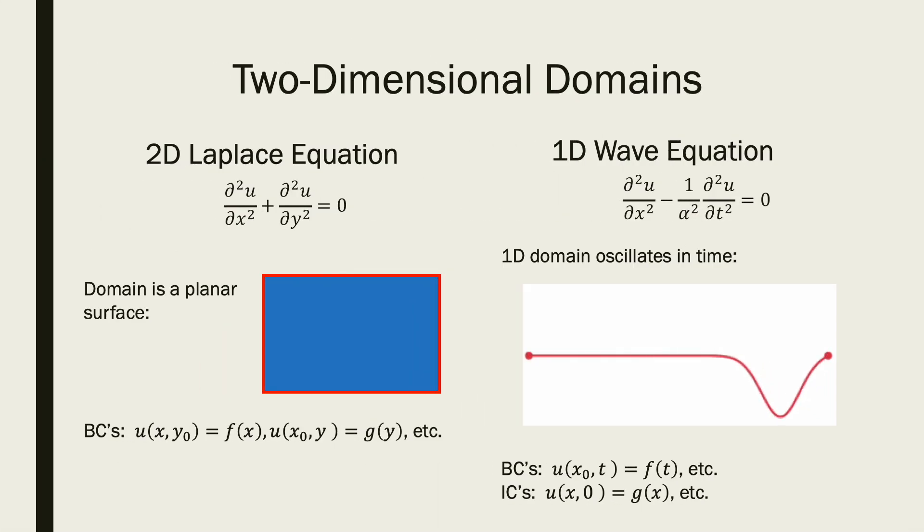For example, the 2D Laplace equation and the 1D wave equation both have solutions with two independent variables. The Laplace equation models the steady state equilibrium of some field over some 2D planar spatial domain. It can have boundary conditions imposed on the spatial boundaries of this domain. The 1D wave equation is thought of to model a 1D spatial domain, like an infinitely thin guitar string vibrating in time. It could have boundary conditions at the edges of its spatial domain, but conditions at the beginning of the time domain are called initial conditions.